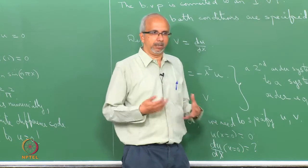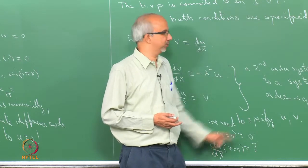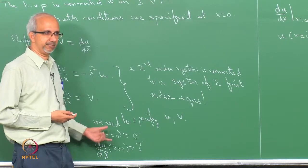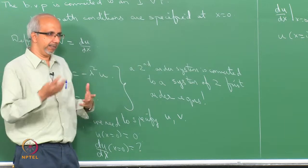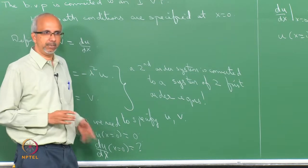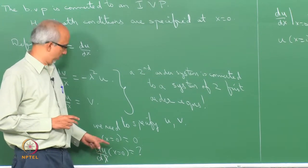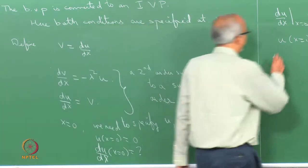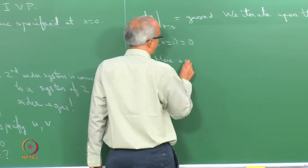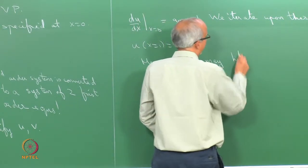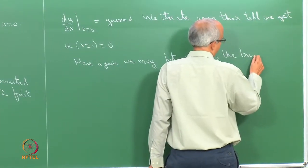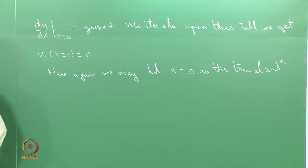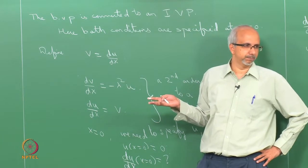We combine a Newton-Raphson method with integration: start with a guess, integrate, check the condition, then iterate. Unfortunately, even this approach may converge to the trivial u = 0 solution, because the computer does not know we are looking for a non-zero solution. This illustrates how a boundary value problem is converted to an initial value problem.